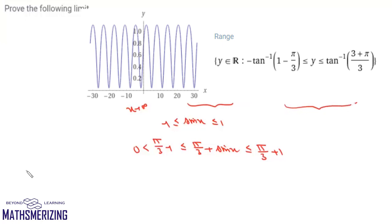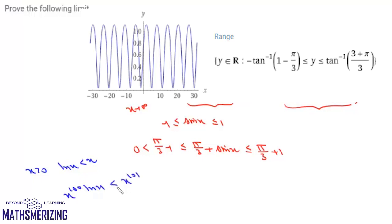Now we know that when x is greater than 0, log x is less than x. Multiplying both sides by x to the power 100, we get x^100 · log x < x^101. Dividing by e to the power x, we can write x^100 · log x / e^x < x^101 / e^x.